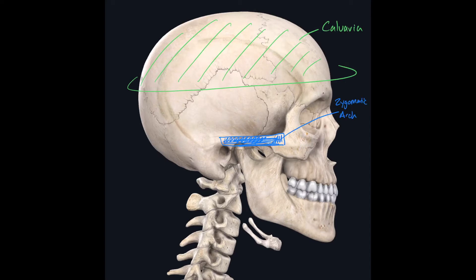Just superior to the zygomatic arch, there is a depression located just superior and a little anterior to where the ear would be. This depression is called the temporal fossa.